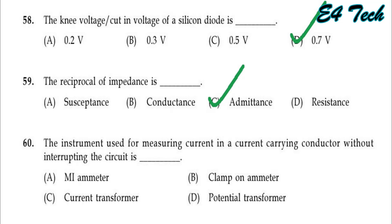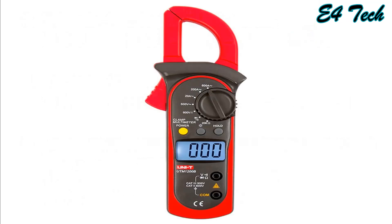The instrument used for measuring current in a current-carrying conductor without interrupting the circuit is a clamp-on meter. The clamp-on meter uses a ring-type arrangement. That is Option B.